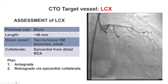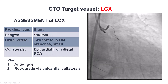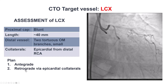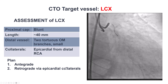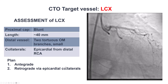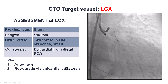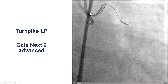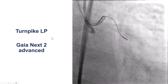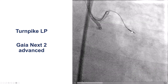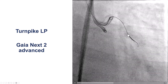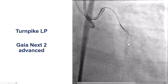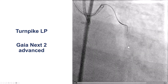Our plan was to try antegrade, and if that didn't work, consider retrograde through epicardial collaterals — though that was a very high bar because the collaterals were fairly poor and epicardial. We tried to cross using a Turnpike and a Gaia Next 2. We did make some progress, but the wire kept getting stuck within the previous stents, likely because of interaction with the struts of the previous stents.